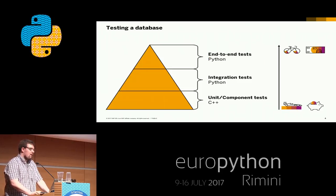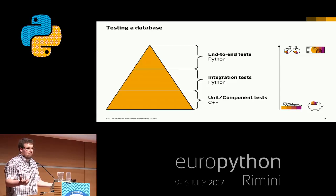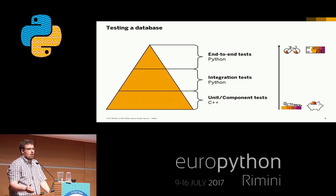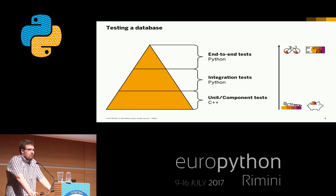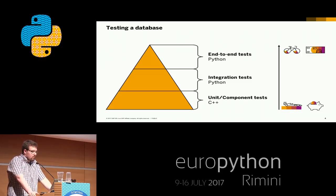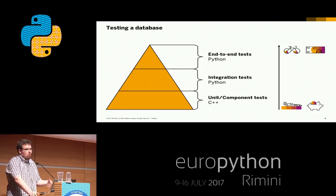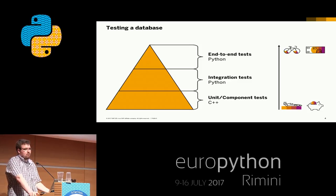Let's talk a little bit about testing a database. Testing a database is not so different from testing software, because the database is just software. We have this very typical pyramid. On the bottom we have unit and component tests written in C++, because it's the main language of HANA. But if you start writing integration tests or complex end-to-end tests, C++ doesn't fit very well anymore, and most of those tests are then written in Python. More complex integration tests will be a little bit slower and more expensive, while unit tests are much faster and cheaper.